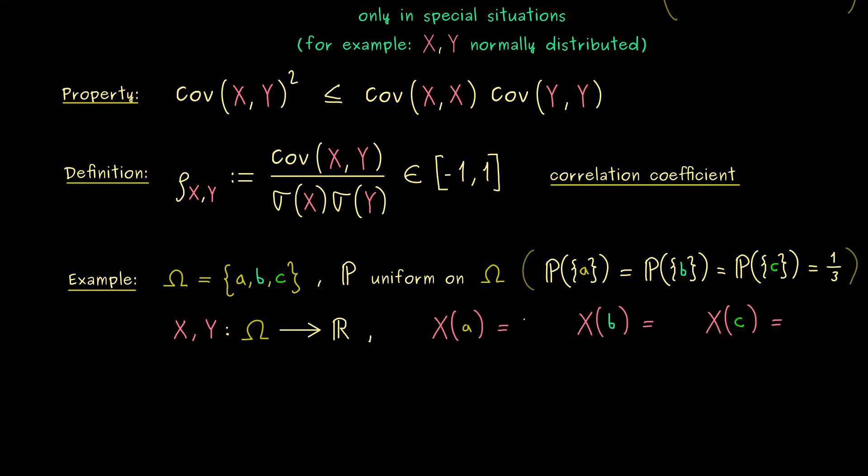And we can do that by saying what I do with the three elements. Now, X should send the first one to 1, the second one to 0 and the last one to minus 1. So not so complicated and now let's do the same for Y.